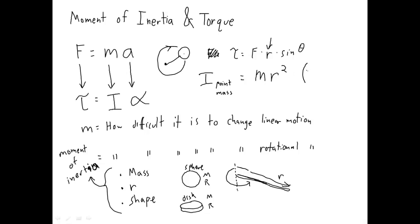Units: mass is measured in kilograms, radius is measured in meters, so we square those meters. The units of moment of inertia are kilogram meters squared. It's a scalar quantity, just like normal mass.